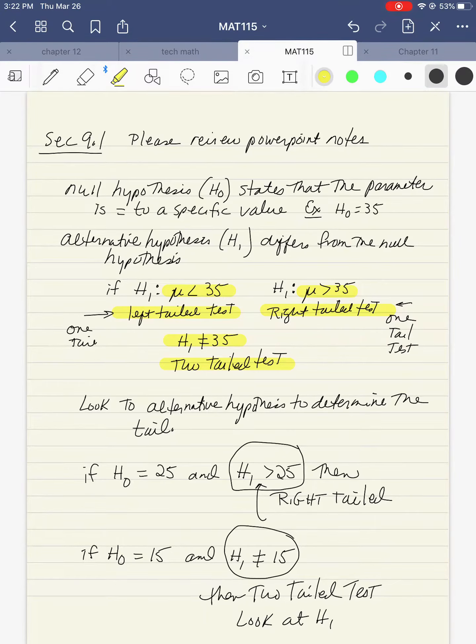Section 9.1, please review the PowerPoint notes. The null hypothesis H0 states that the parameter is equal to a specific value. That is, the null hypothesis is equal to 35.